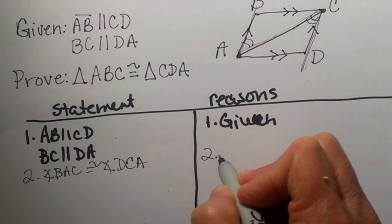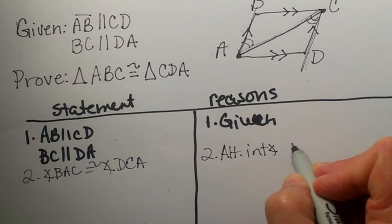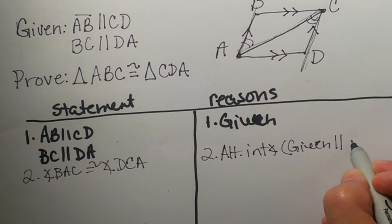How do I know that? Because of alternate interior angles. Given that we have parallel sides. When we have parallel sides we can say alternate interior angles.